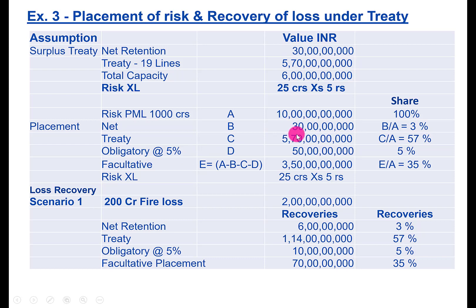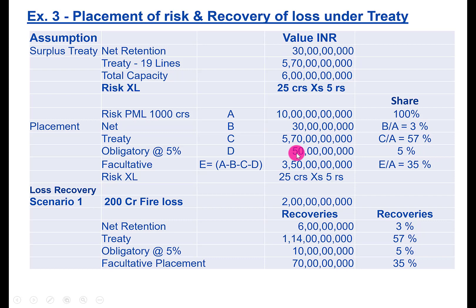Net retention is 30 crores, which is 3 percent (30 divided by 1,000). The full 19 lines treaty capacity of 570 crores, i.e., 57 percent, goes to treaty. GIC obligatory is 5 percent, which is 50 crores. So total FACA requirement is 1,000 minus 30 minus 570 minus 50, which equals 350 crores, or 35 percent.